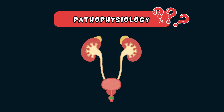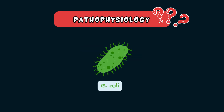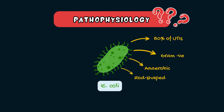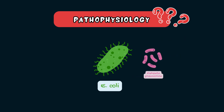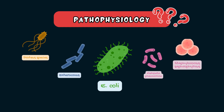Most UTIs start when bacteria from the perineal area ascend the urethra and climb up into the bladder. The most common bacterium is Escherichia coli, or E. coli, which is responsible for over 80% of urinary tract infections. E. coli is a gram-negative, anaerobic, rod-shaped bacterium present in the intestines and faeces. Other causative organisms include Klebsiella pneumoniae, Proteus, Enterococcus, Staphylococcus saprophyticus, and Candida, which is a fungal infection.